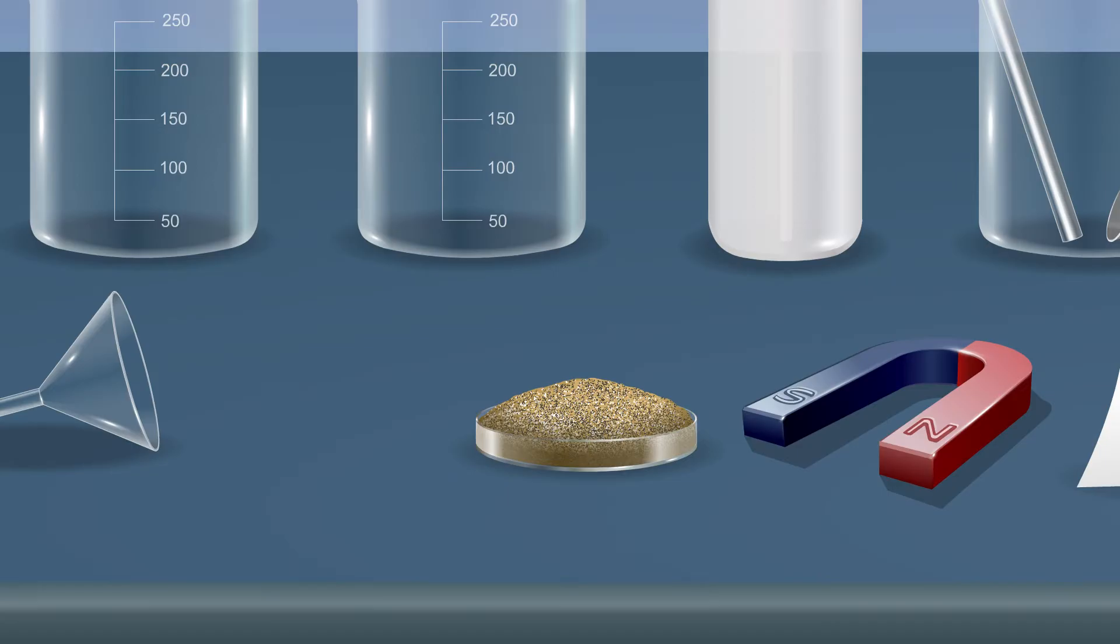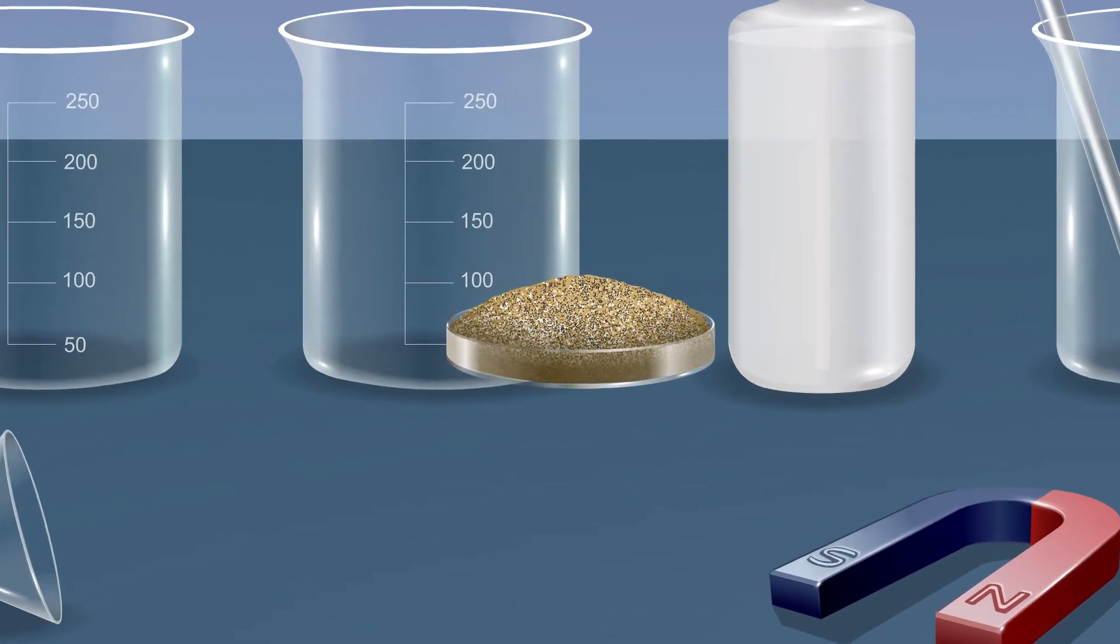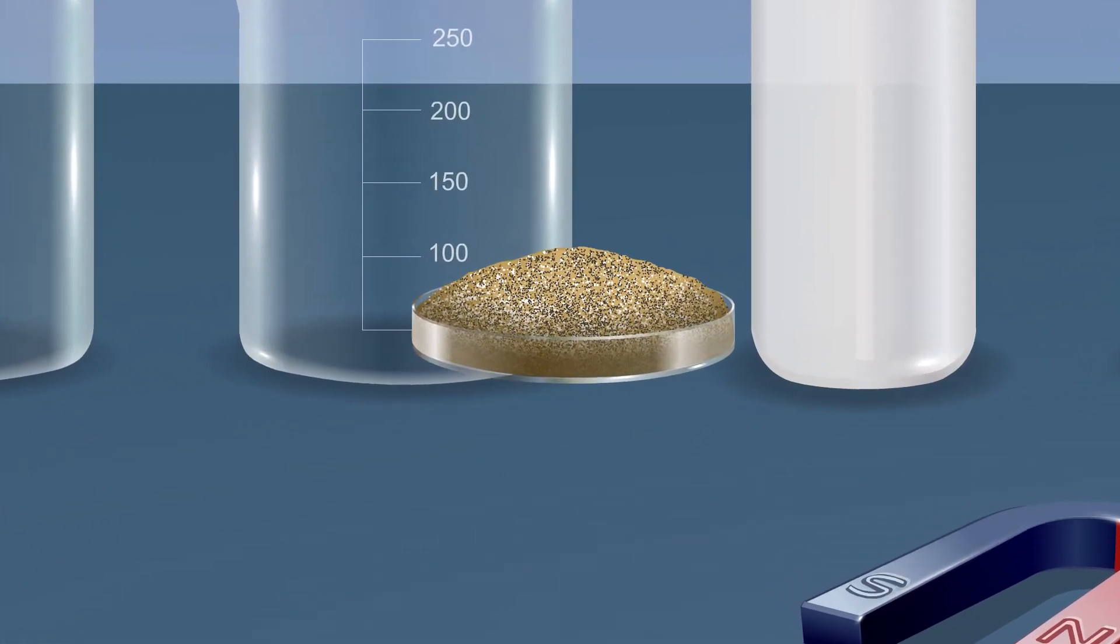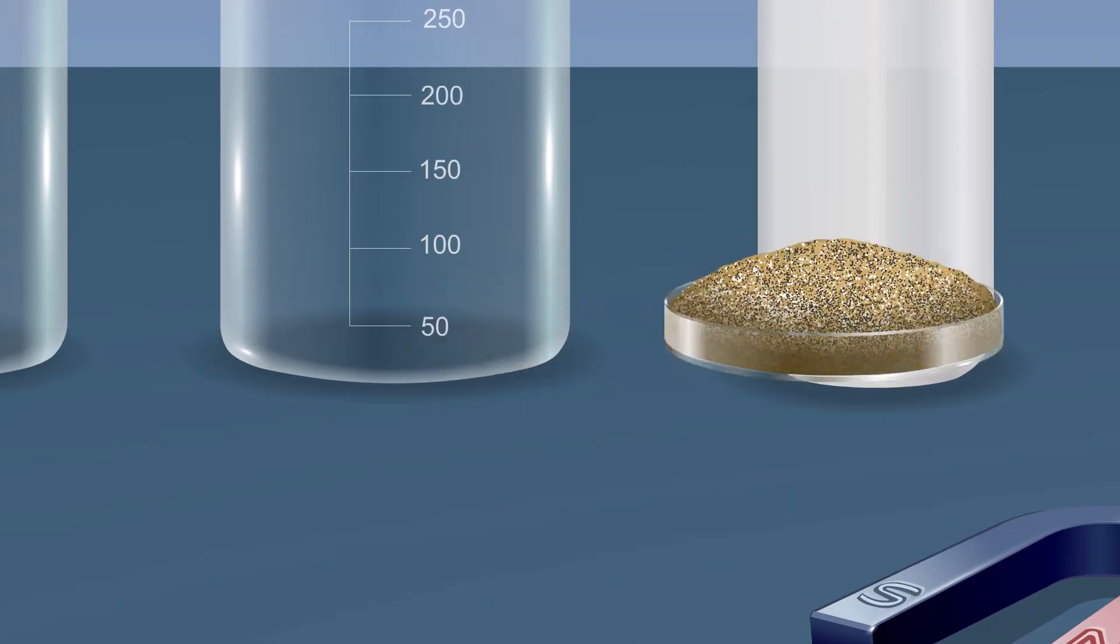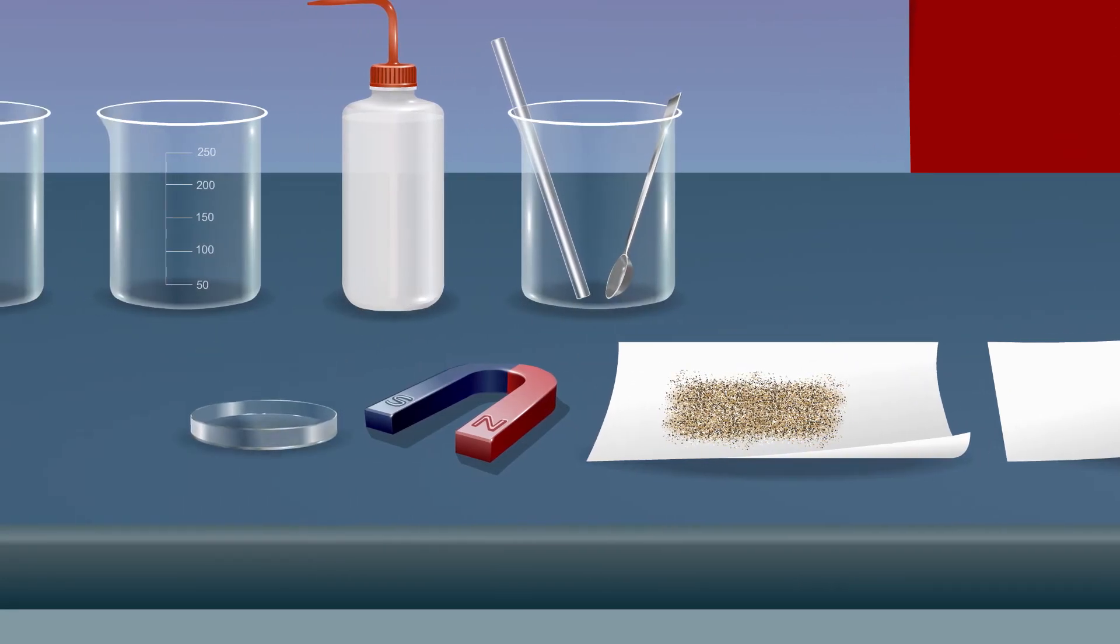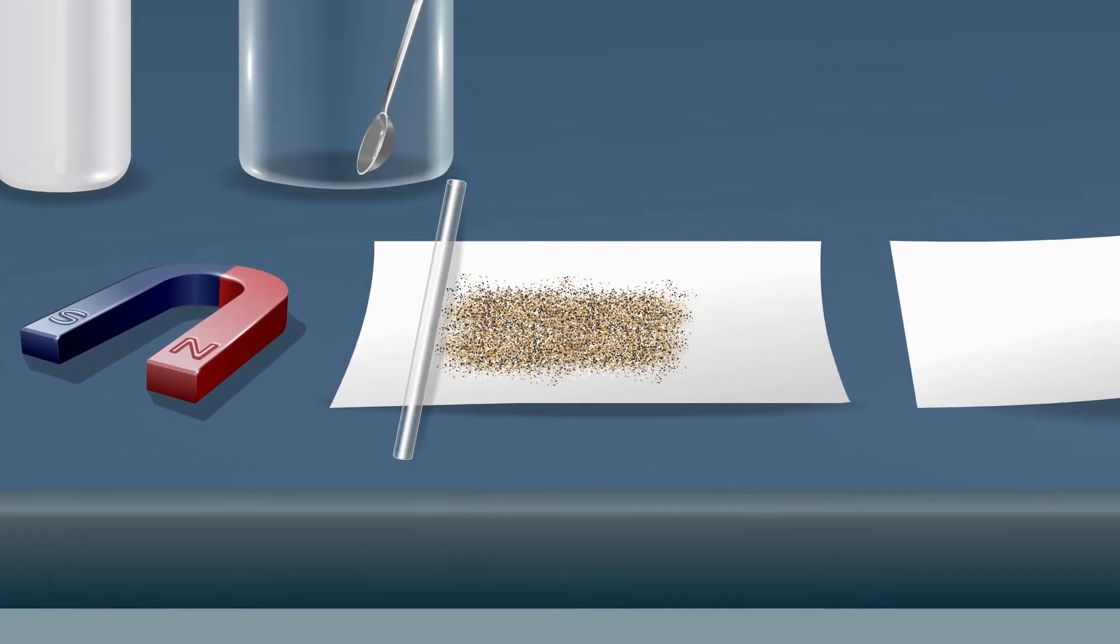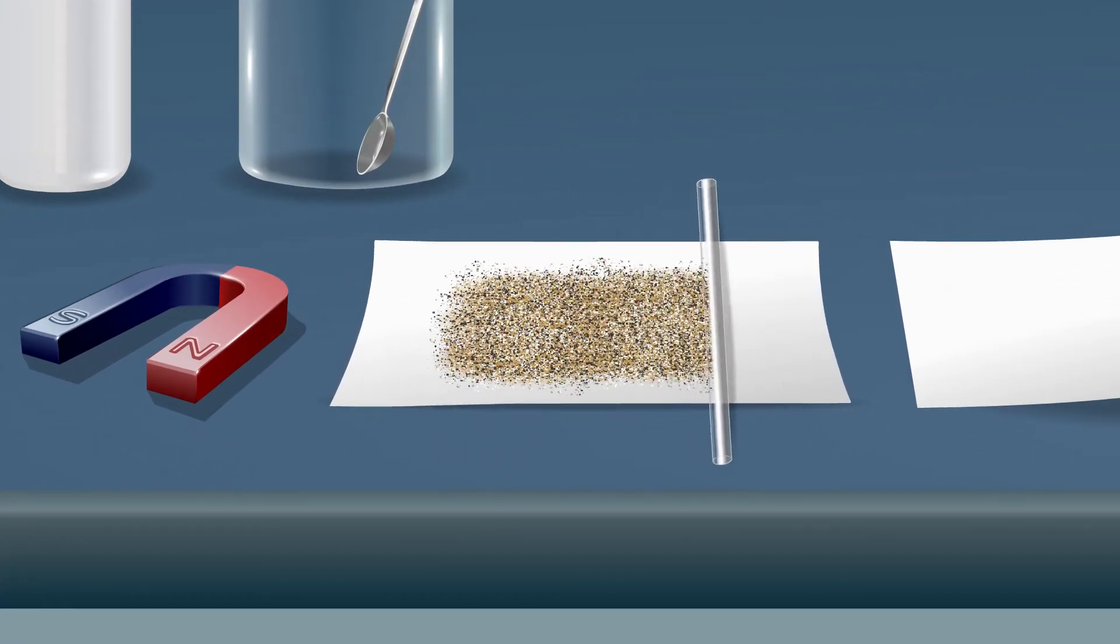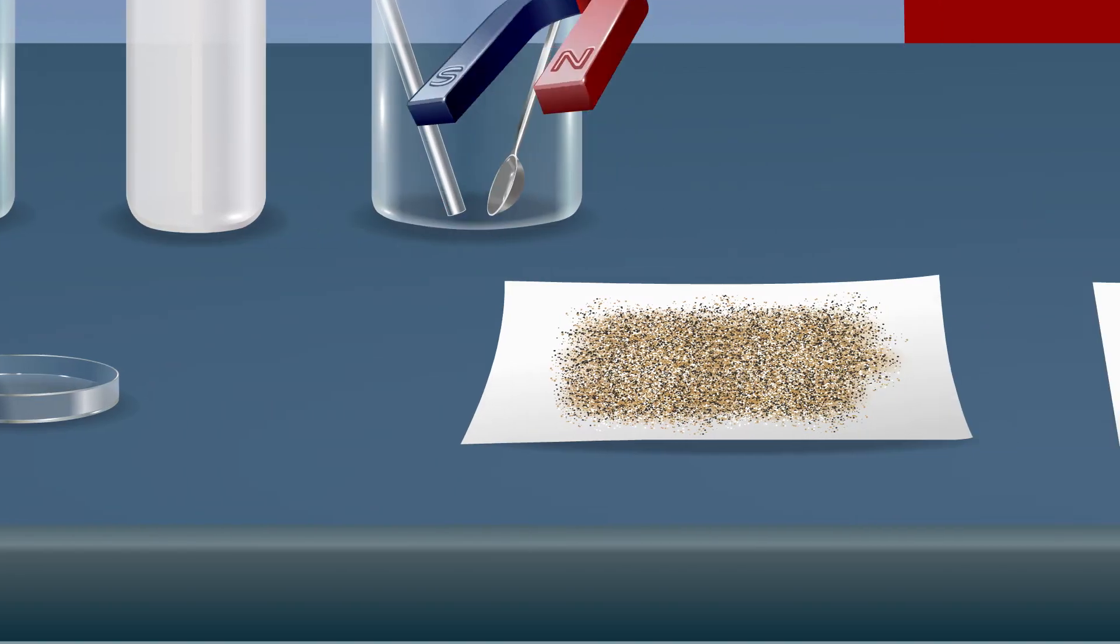Take a small amount of the given mixture of iron filings, sand and common salt in a petri dish. Spread the mixture on a sheet of paper. Take a glass rod and using the glass rod, spread the mixture.